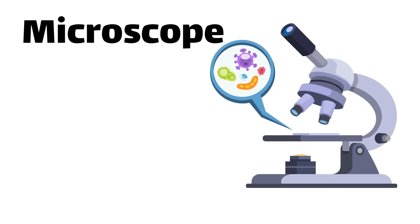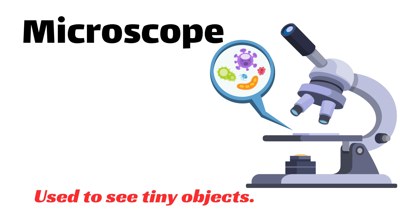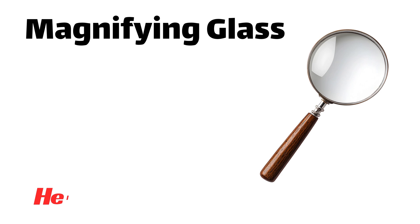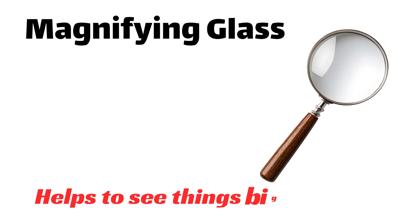Microscope — used to see tiny objects. Magnifying glass — helps to see things bigger.